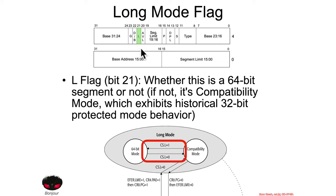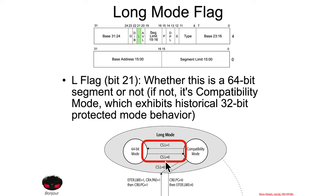Let's dig in with a single bit that helps us understand this Black Manta finite state machine. Within a segment descriptor is a field called the L flag, which stands for the long mode flag. This is bit 21, and it specifies whether or not this segment describes a 64-bit segment. If it's set to 1, it's a 64-bit memory segment; if it's set to 0, it's not. Looking at that finite state machine, if the code segment register points at a segment that has the L-bit set, it's operating in 64-bit mode. If it's equal to 0, you're in compatibility mode, i.e., 32-bit mode.